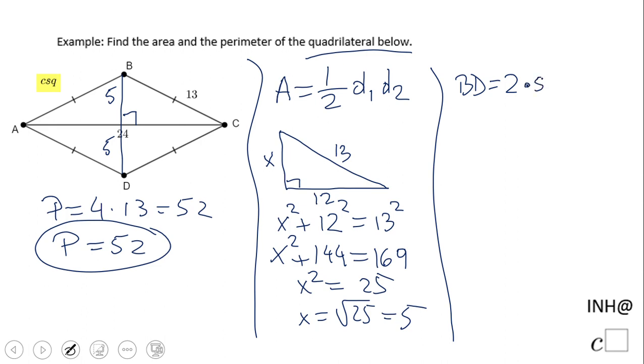Now we can find the area, right? Because the area would be one-half times the first diagonal, which was given to us as 24, times the second diagonal we found, which is 10. You have choices. I will simplify it: one-half times 24 is 12, times 10 is 120, and that's it.